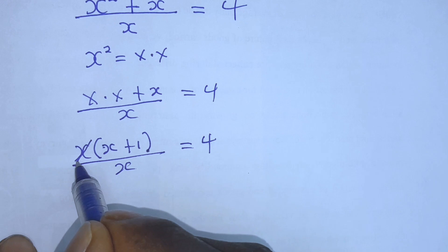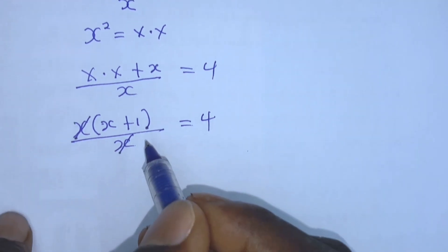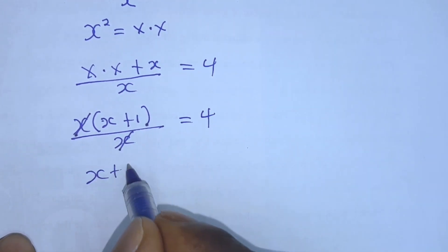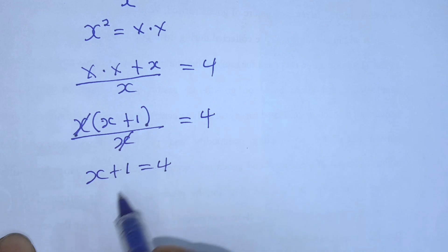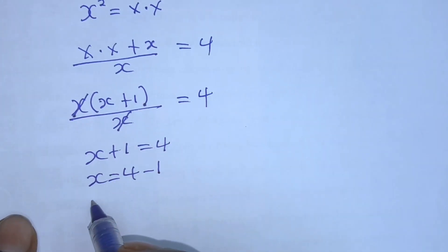From this step, this x cancels this x. We're left with x plus 1 is equal to 4. And x is equal to 4 minus 1. And therefore, x is equal to 3.